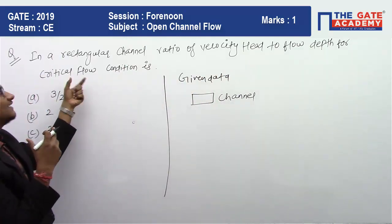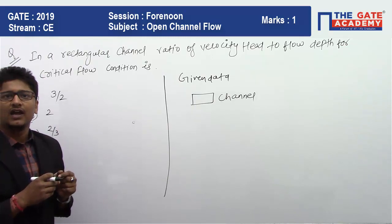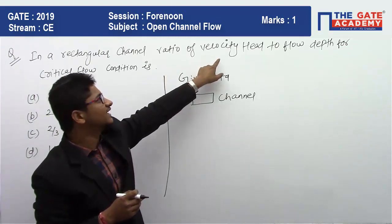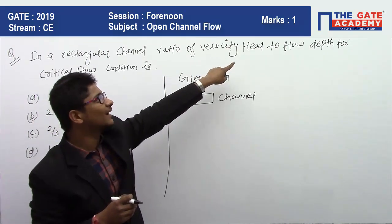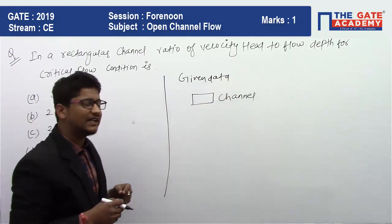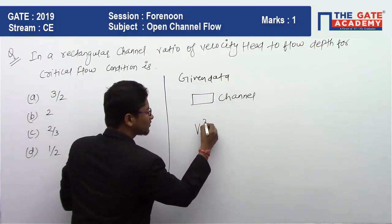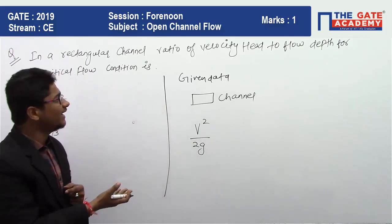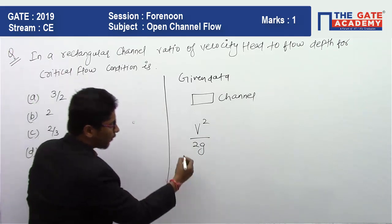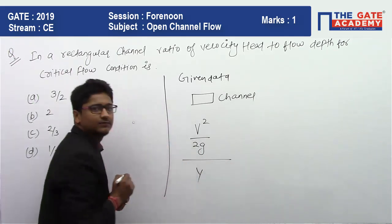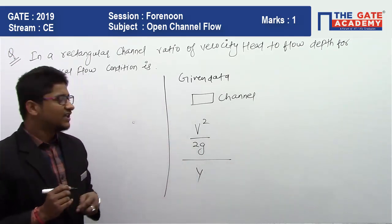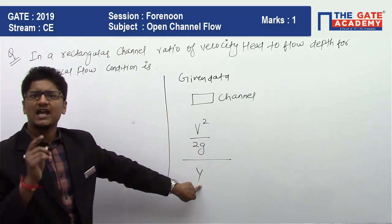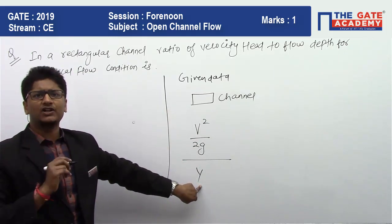The condition given is critical flow, and what we need to find is the ratio of velocity head to flow depth — that is v² / 2g divided by y, where v² / 2g is the velocity head and y is the flow depth.